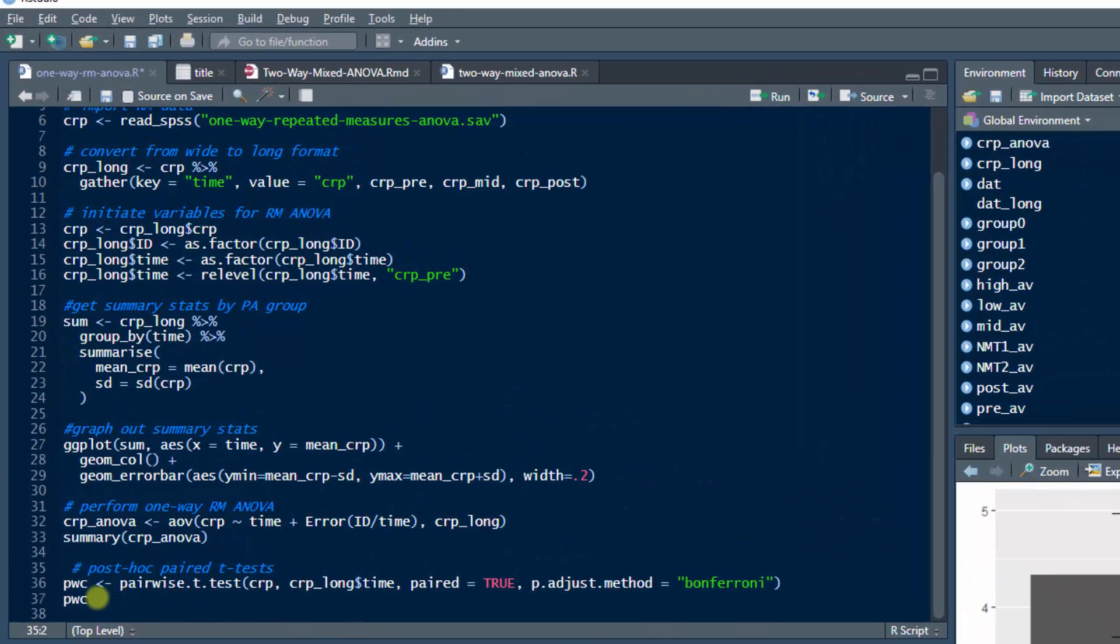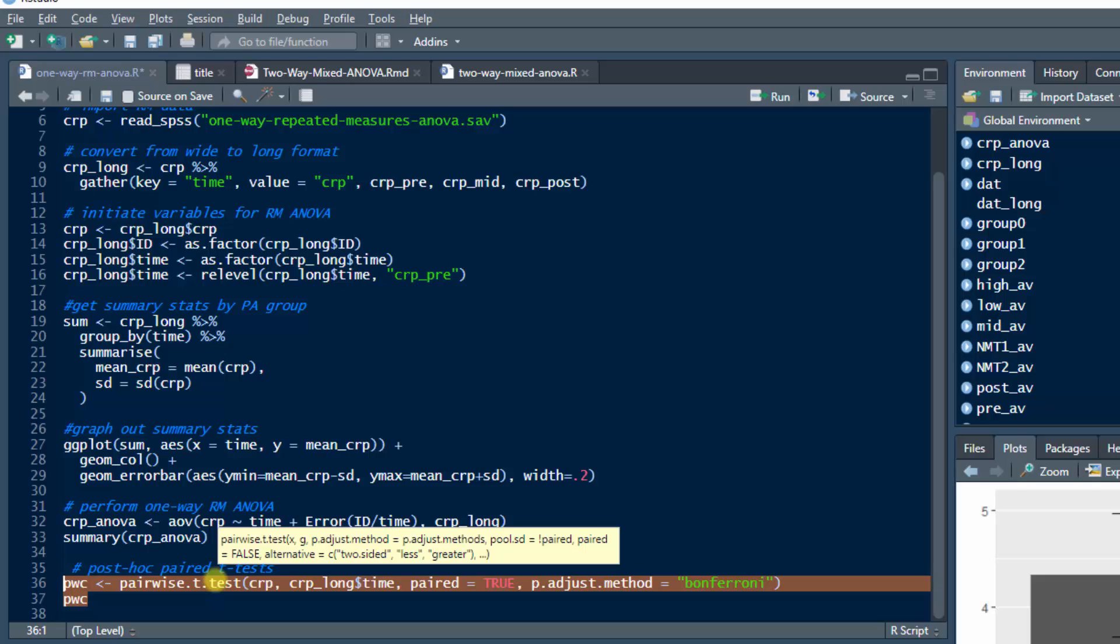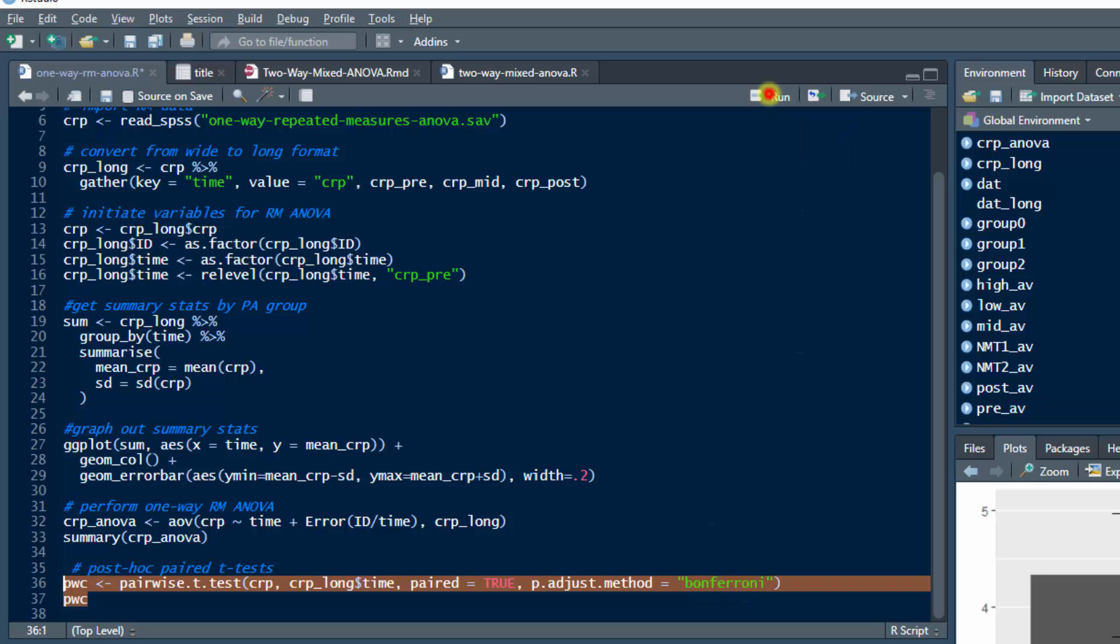In RStudio, you run this line of code. I run what's called a pairwise.t.test. Pairwise means it's a pairwise comparison. We're following up using this paired t-test on CRP, our dependent variable, between those three time points, that's the independent variable. And the adjustment that we're making to our alpha level is known as the Bonferroni. I'm going to hit run.